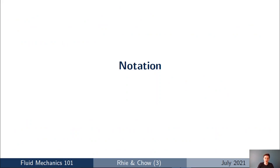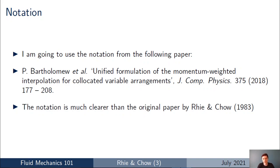Before going into the derivation of the Rhie-Chow correction, let's look at the notation, since there are different subscripts and superscripts you'll see throughout. If you search the internet you'll find a variety of notations. I'll be using notation from a paper by Bartholomew et al., linked in the description below. The reason I chose this notation over the original Rhie-Chow paper is that it's clearer and the derivation is more comprehensive, so everything in this talk will be consistent with that paper and easier to follow.